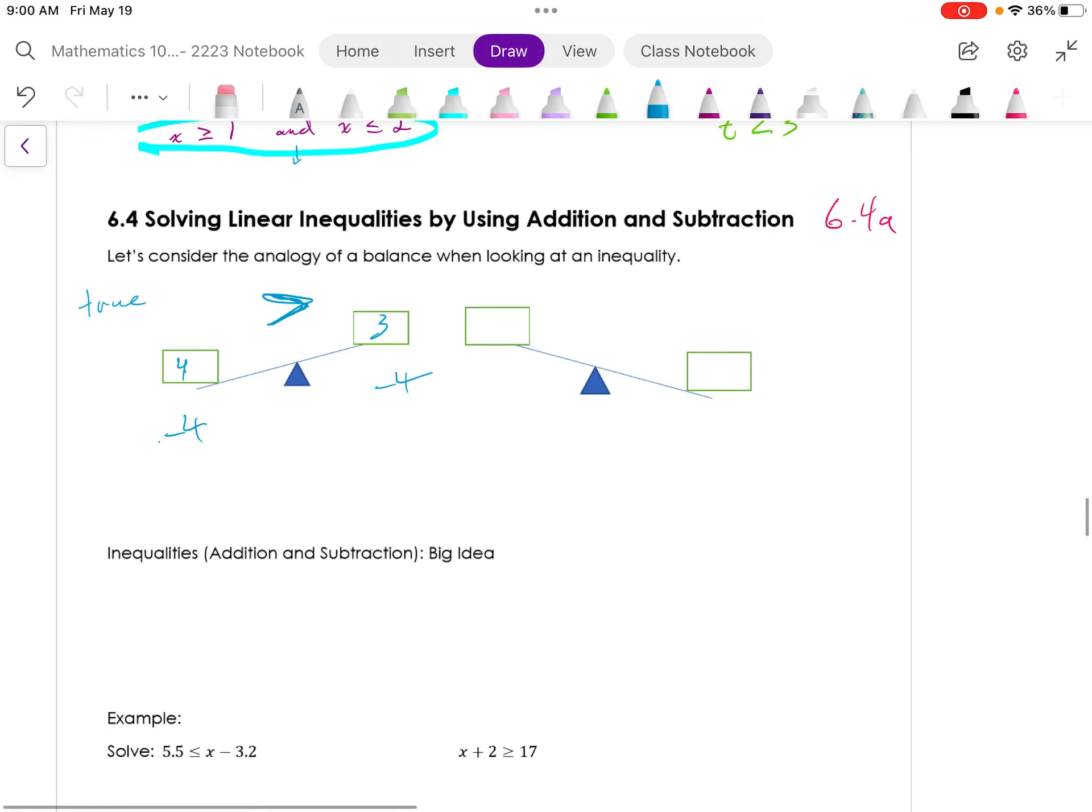Now let's try to subtract 4. What we get is 0 and negative 1. Well, 0 is still greater than negative 1. So this holds true for subtraction as well.